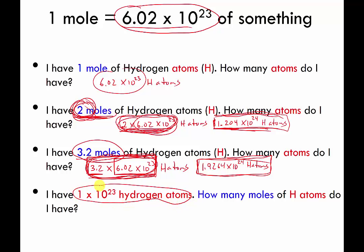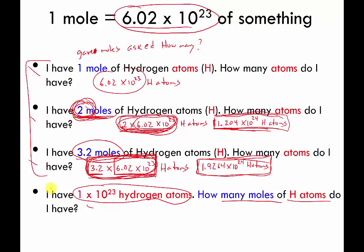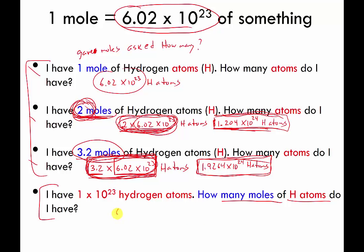Here's a very different question: I have 1×10²³ H atoms — how many moles of hydrogen atoms do I have? This question is phrased backwards from all the others. Before I gave you moles and asked how many atoms; now I give you how many atoms and ask for moles. I tend to set it up as a ratio: 6.02×10²³ H atoms equals 1 mole of H atoms.